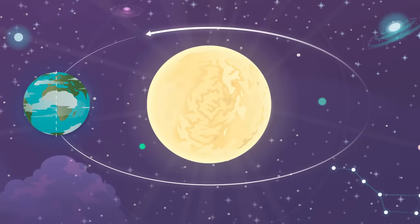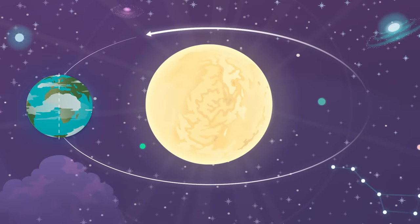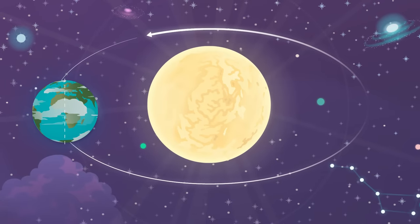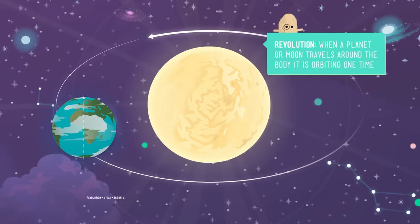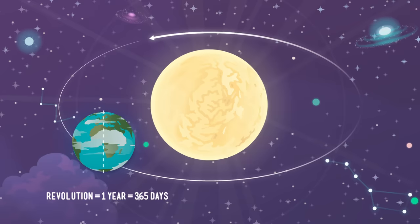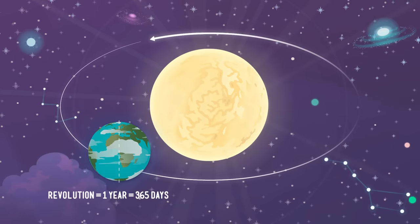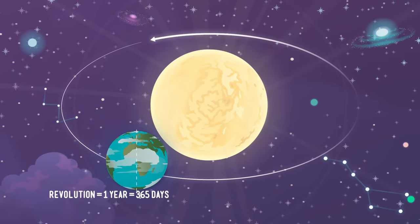Now, hold on tight, because the Earth is actually moving in more ways than one. At the same time that the Earth spins on its axis, it also orbits, or revolves around, the sun. This movement is called its revolution. One full orbit all the way around the sun is one revolution, and the Earth takes 365 days, or one year, to complete a revolution.